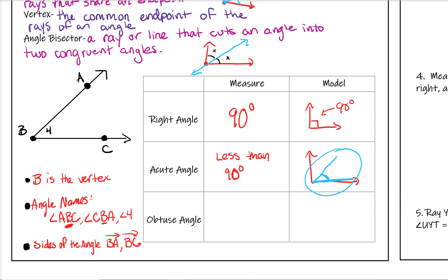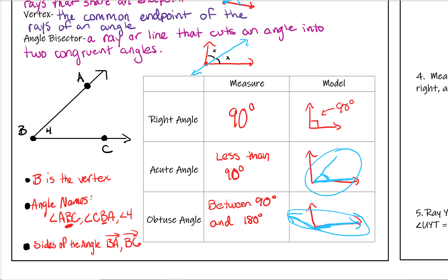An obtuse angle is an angle between 90 degrees and 180 degrees — more than 90 but less than 180. There is also a name for angles bigger than 180 degrees: those are called reflex angles, though you don't need to have that term memorized. Obtuse angles are bigger, going out more than 90 degrees.